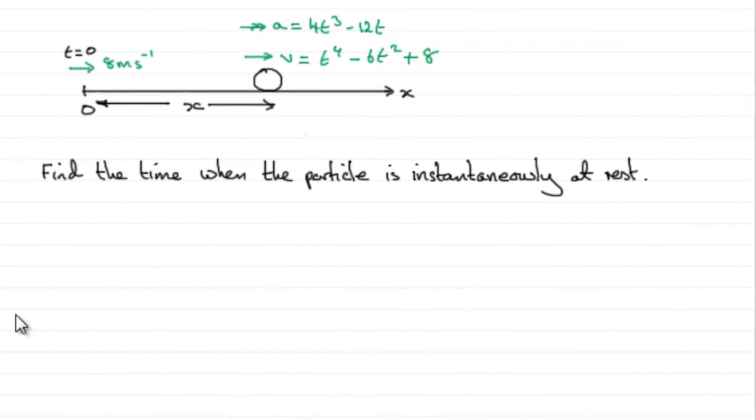Now for the last part of this question, we've got to find the time when the particle is instantaneously at rest. To do this, all we've got to do is set V equal to 0.